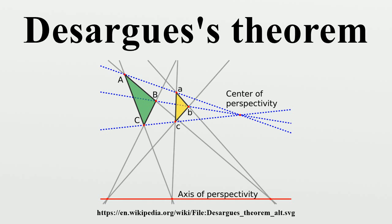Therefore, the lines AB and A'B' belong to the same plane and must intersect. Further, if the two triangles lie on different planes, then the point AB∩A'B' belongs to both planes. By a symmetric argument, the points AC∩A'C' and BC∩B'C' also exist and belong to the planes of both triangles. Since these two planes intersect in more than one point, their intersection is a line that contains all three points.